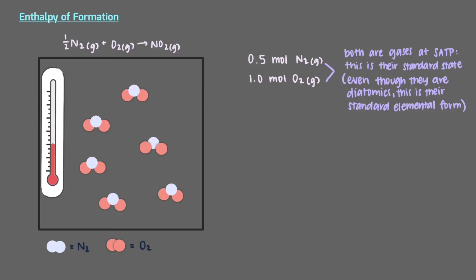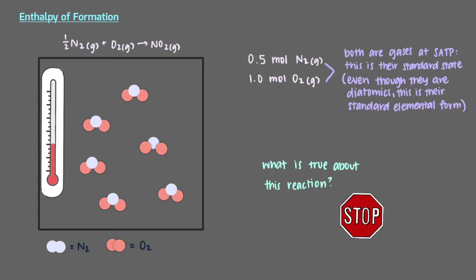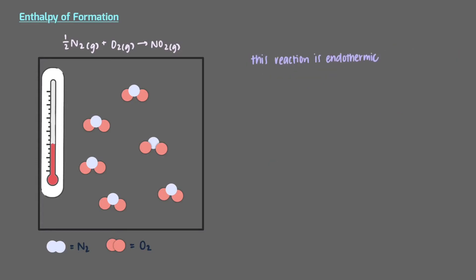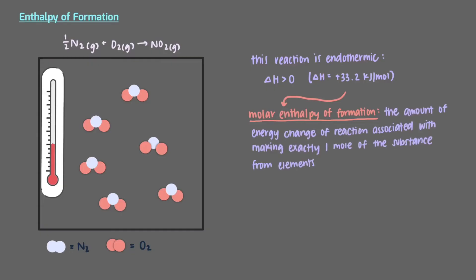As the reaction takes place, the container gets cold. This is an endothermic reaction, and delta H is positive — it's actually positive 33.2 kJ per mole. This enthalpy is called the molar enthalpy of formation of nitrogen dioxide: the amount of energy change of reaction associated with making exactly 1 mole of the substance, in this case nitrogen dioxide, from elements.